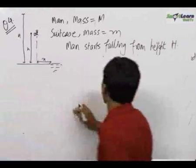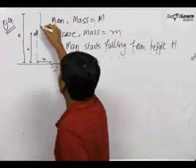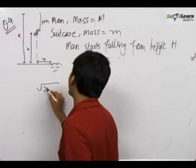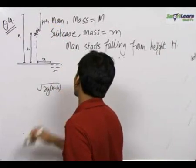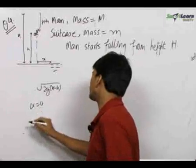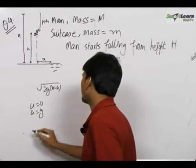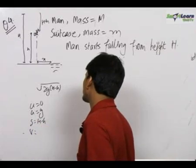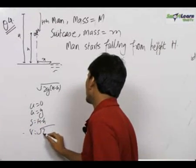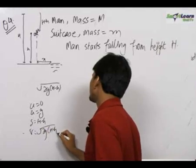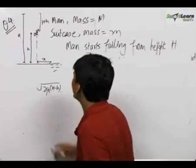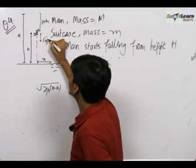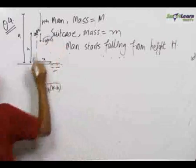For the first part, the man free falls the height H minus h. We can directly write down his velocity to be root over 2g(H minus h), because initial velocity was 0, acceleration is equal to g, and displacement is equal to H minus h. We get the final velocity by v² = u² + 2as to be root over 2g(H minus h). So the velocity of the man at this point is root over 2g(H minus h).